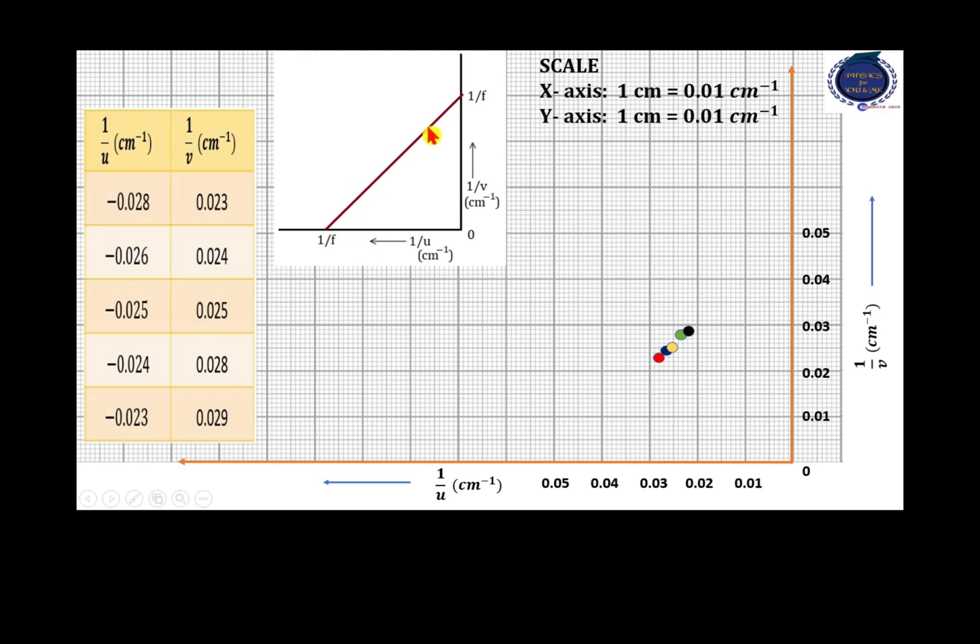Now, while drawing such straight line, we should always remember that this straight line should intersect both x and y-axis at the same value. And also, it will pass through most of these points. This straight line is intersecting x and y-axis at 0.051 per centimeter. The reciprocal of which will give the exact value of the focal length of the given convex lens, which is 19.6 centimeter. I hope with these two examples, you have understood the technique of plotting a graph.